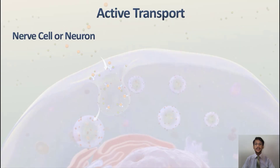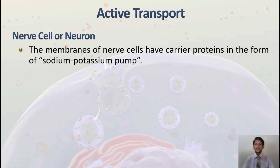An example of active transport in our body is the nerve cell or neuron. The membranes of nerve cells have carrier proteins in the form of a sodium-potassium pump. The cell membrane of neurons has carrier proteins called the sodium-potassium pump, which is a protein that maintains the concentration of sodium ions and potassium ions.